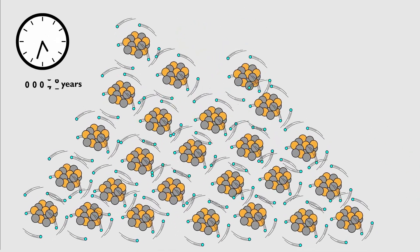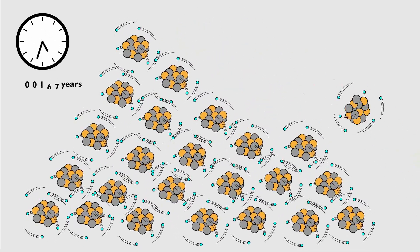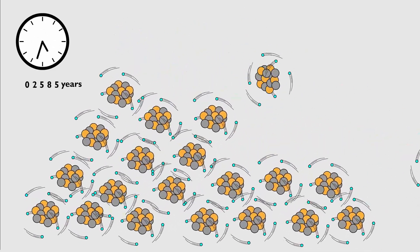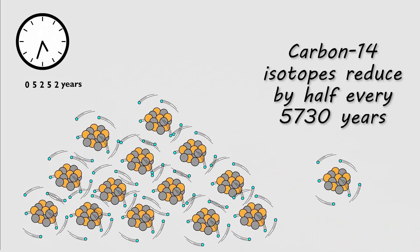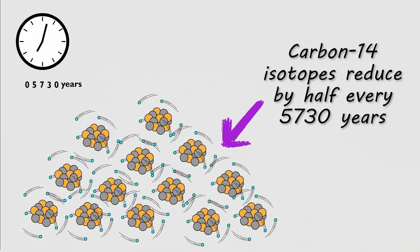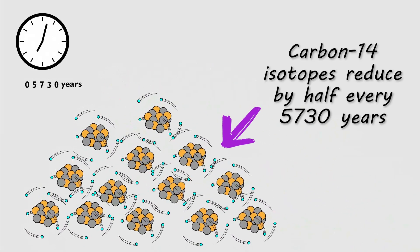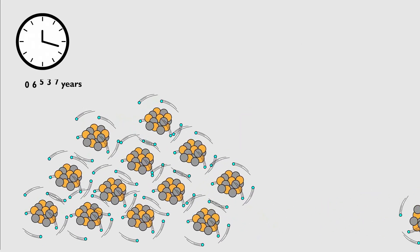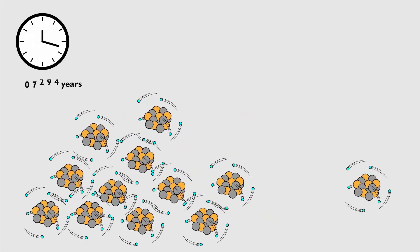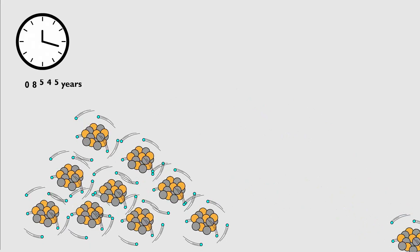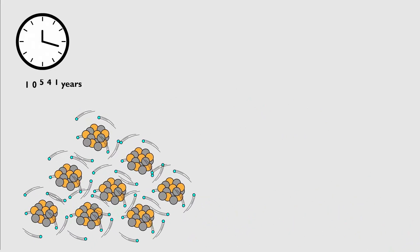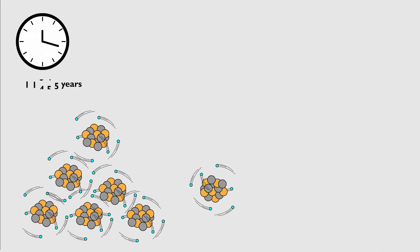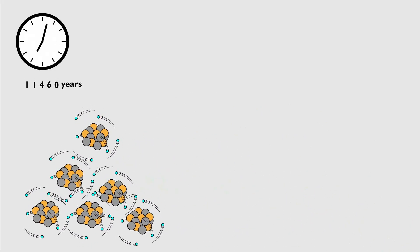It takes 5,730 years for the amount of carbon-14 in a material to reduce by half. Scientists call this the half-life of an isotope. The amount of carbon-14 molecules left at the time when the bone, wood or shell is sampled can be used like a clock to measure how much time has passed since the plant or animal died.